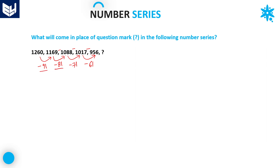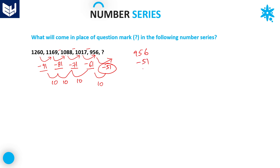So the gaps are minus 91, minus 81, minus 71, minus 61. Each value decreases by 10, so the next gap will also decrease by 10, giving us minus 51. Therefore 956 minus 51 equals 905. The answer in place of the question mark is 905.